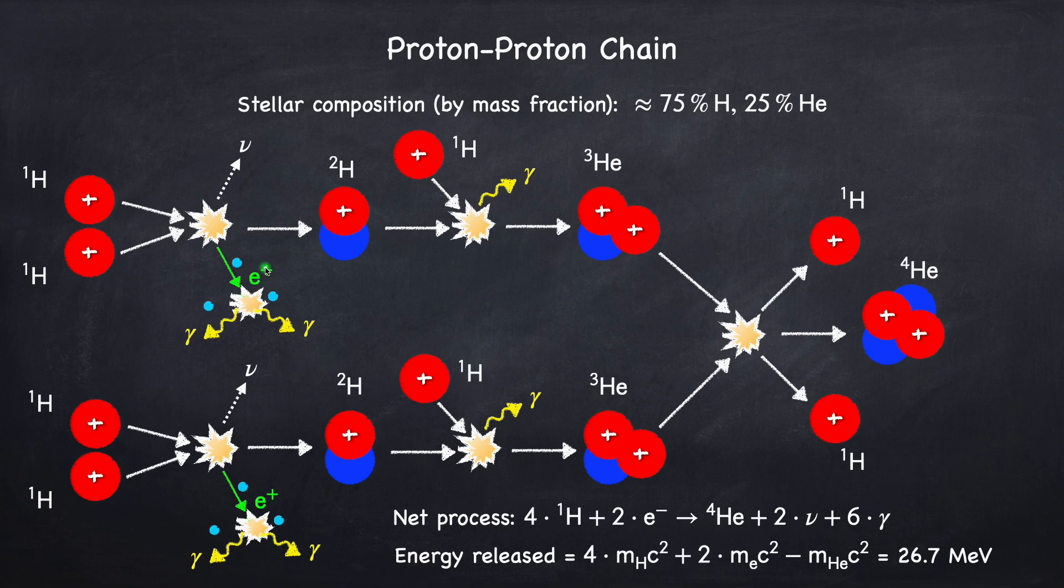The force that is responsible for converting neutrons into protons, and vice versa, is the weak nuclear force. And any time you have a weak interaction, you also have to have an emission of neutrinos. So this means that any time you capture or emit a positron or an electron, a neutrino will also be emitted.